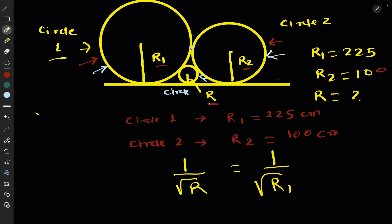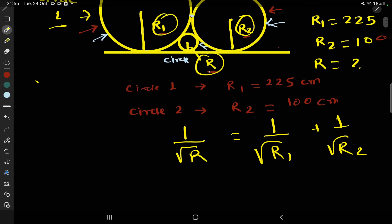Plus 1/√R2, where R2 is the second bigger circle touching both Circle 1 and Circle 3 externally. R1 is here, R2 is here, and R is the smaller circle. We've been given data: R1 = 225 cm and R2 = 100 cm.